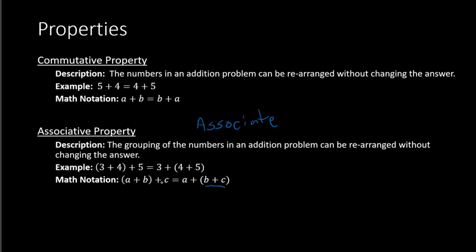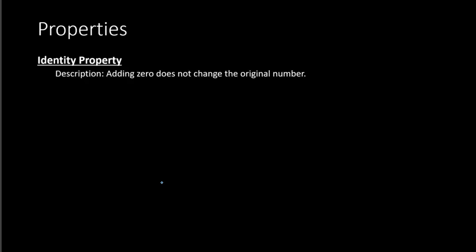So we have the commutative property and the associative property. The third property for addition is your identity property. This property says that adding zero does not change the original number. For example, if we have 6 plus 0, adding zero doesn't change the number — it's still going to be 6. Another example: if we have the number 100, if we add 0, we still have 100 as our answer. Adding zero does not change the original number.